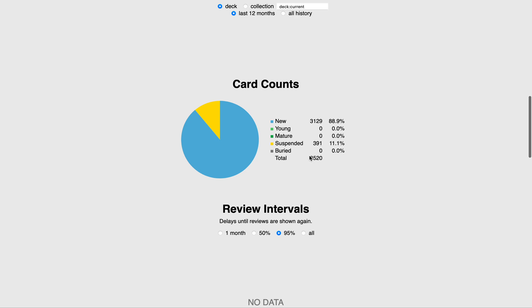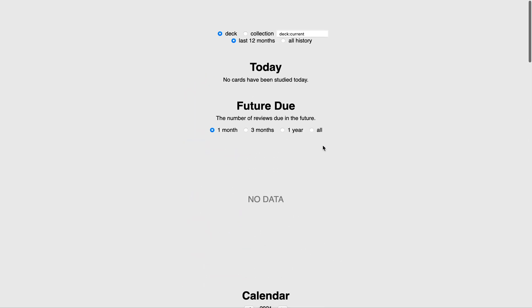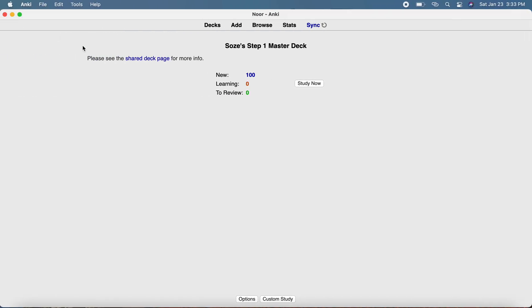Our goal is to finish and achieve all maturity - we want to make the entire total, say 3520 cards, mature. But this is in a perfect world; nobody does that unless they started very early. Young is when you've seen the card once or twice, mature is when it's in the back of your head, and suspended - I have about 391 suspended cards across two chapters.